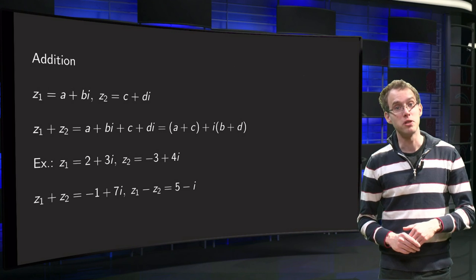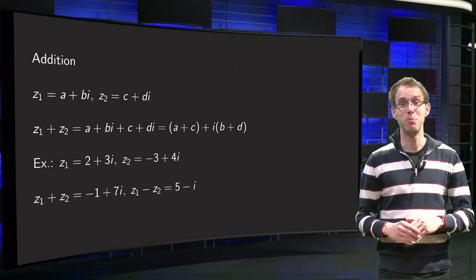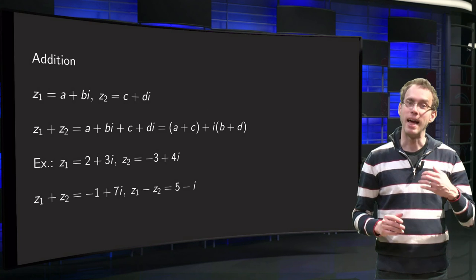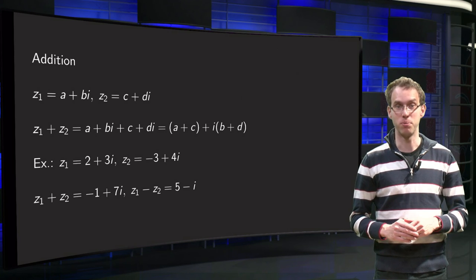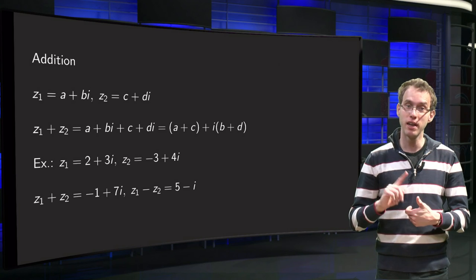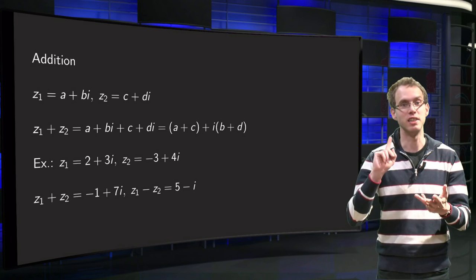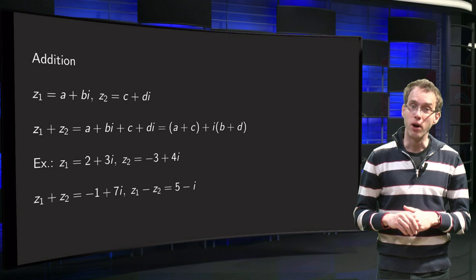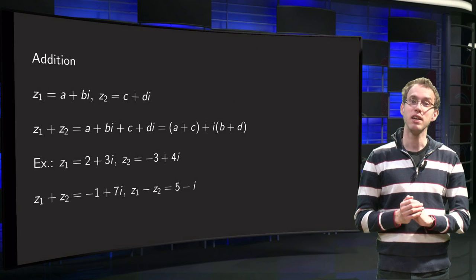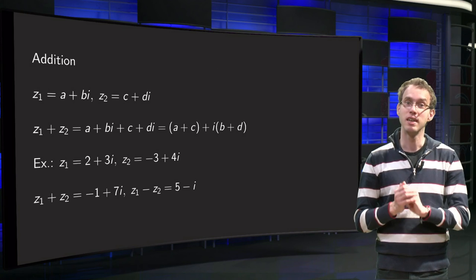You know what complex numbers are, but how can we do computations with them? In this video we will start with the basic computations. You will learn about addition, subtraction, multiplication and division. All you need is that i squared equals minus 1, as you will see in this video.